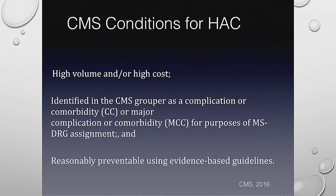In 2008, CMS determined they will decline payment for any hospital-acquired pressure ulcer stage 3, stage 4, or a progressive pressure ulcer — for example, a stage 2 progressing to a stage 3. They look at the time frame from admission to discharge. If someone acquired a stage 3 pressure ulcer on our watch, present at discharge and not documented as present on admission, that is a hospital-acquired pressure ulcer.